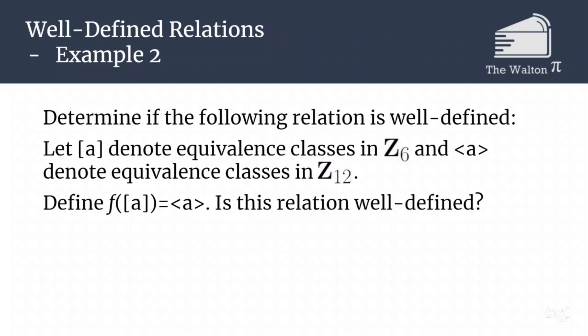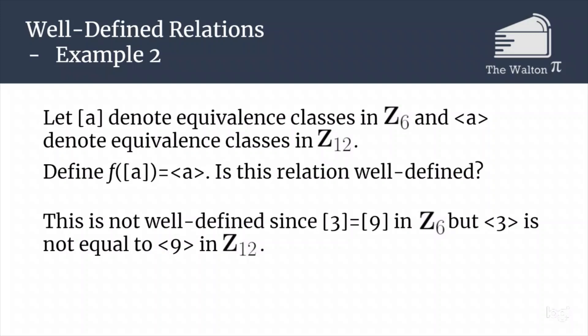Take a minute to try and figure out: is this going to be well-defined? Meaning that if I have two inputs that are the same in Z6, are their outputs going to be the same in Z12? Hopefully you were able to tell that this is actually not well-defined. One counter-example to show this is not well-defined is that [3] = [9] in Z6, but ⟨3⟩ is a different equivalence class than ⟨9⟩ in Z mod 12, because 3 is not equivalent to 9 mod 12, but 3 is equivalent to 9 mod 6. So that is why [3] = [9] but ⟨3⟩ ≠ ⟨9⟩.